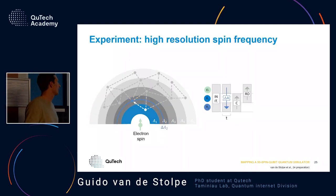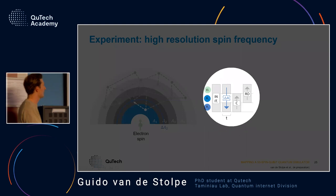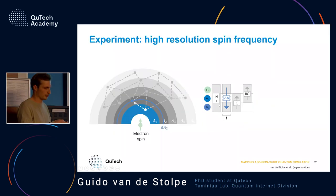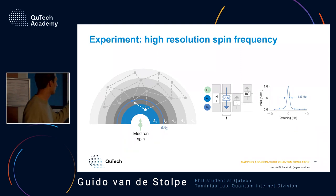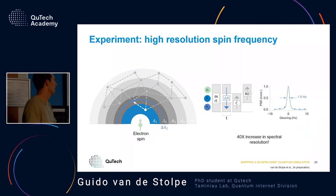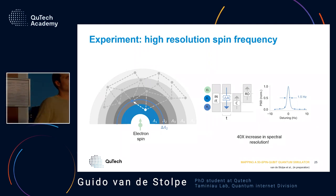We developed a technique where we add one block before this sequence that actually encodes a higher-resolution frequency. If we apply that sequence, we can bring the resolution down to 1.5 Hz — so we can now determine the frequency of the spin at A2 with only 1.5 Hz resolution, which is about a 40-times increase. That really helps when we want to distinguish spins that are almost at the same frequency.